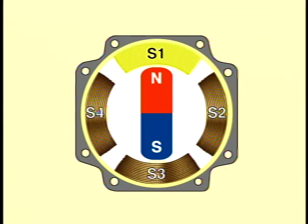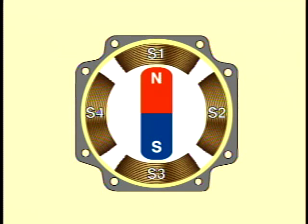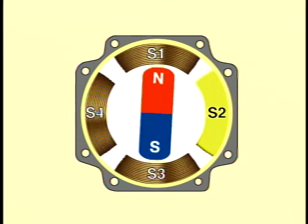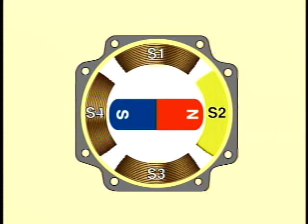Next, when the direct current is turned off in the S1 coil and turned on in the S2 coil, the S2 coil becomes an electromagnet and draws the rotor. The rotor rotates 90 degrees clockwise and stops facing the S2 coil.